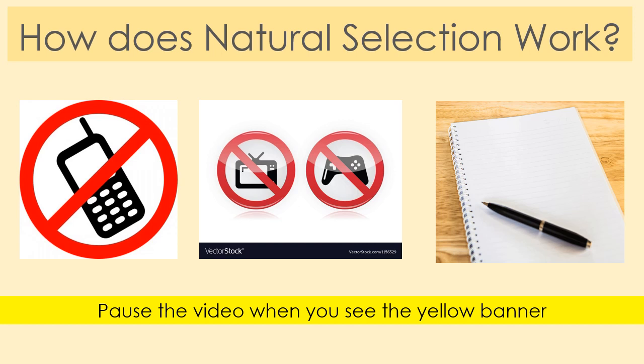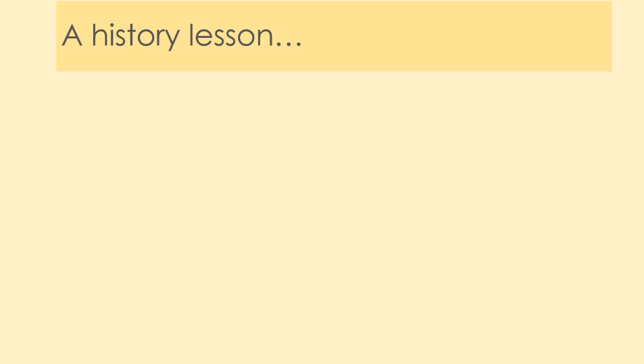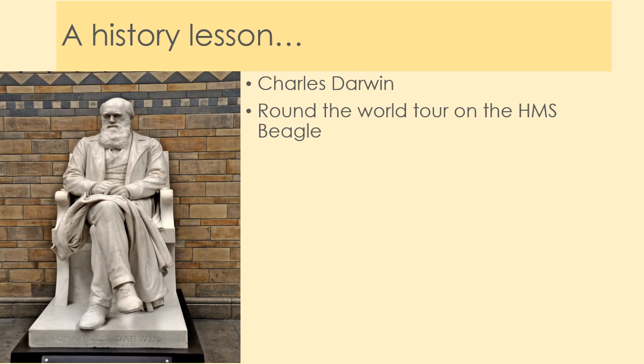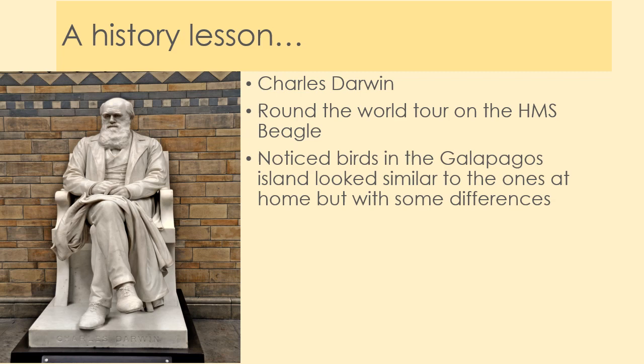We're going to have a bit of a history lesson first and learn about this chap here — Charles Darwin. You can see this statue at the Natural History Museum in London, well worth a visit and completely free. Darwin lived in the 1800s and is most famous for going on a world tour on the HMS Beagle, a ship that went around the world collecting various specimens.